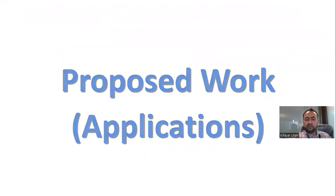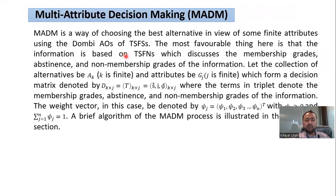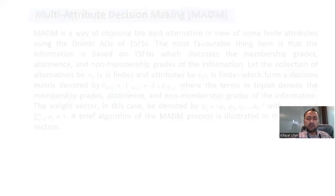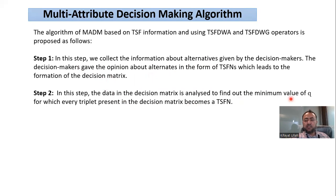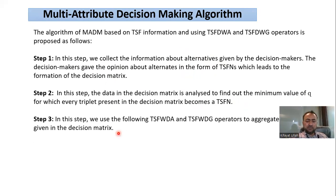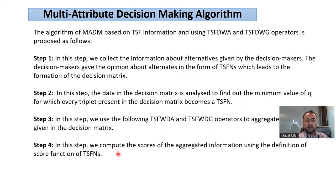Now we present the applications of these Dombi aggregation operators in decision-making problems. The main purpose is to select the best alternative from a finite list, assessed based on some attributes. The decision-making algorithm proceeds in five steps: Step 1, collect information about alternatives from decision-makers; Step 2, determine the value of Q for which every triplet is a T-spherical fuzzy number; Step 3, apply TSFDWA and TSFDWG operators to aggregate the decision matrix; Step 4, compute score values; Step 5, rank the alternatives to identify the best one.